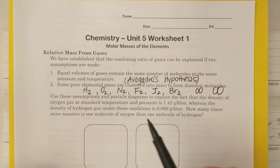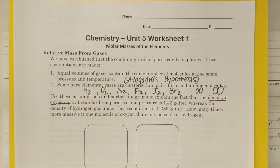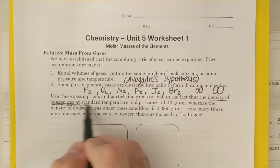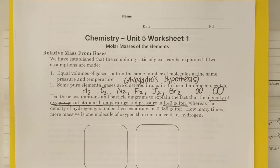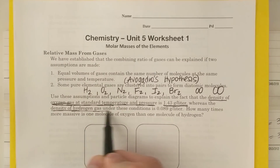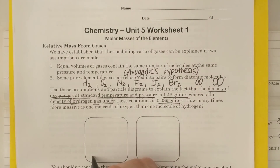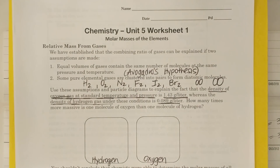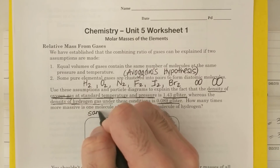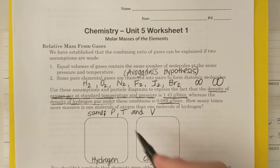So, use these assumptions and particle diagrams to explain the fact that the density of oxygen gas at STP — standard temperature and pressure — is 1.43 grams per liter, whereas the density of hydrogen is 0.089 grams per liter. We have the same pressure, temperature, and volume.